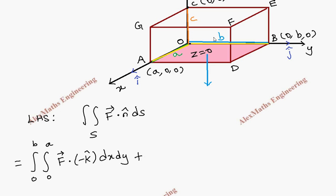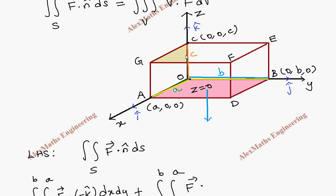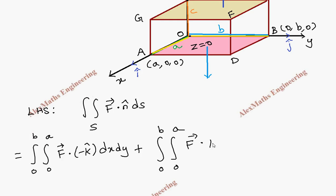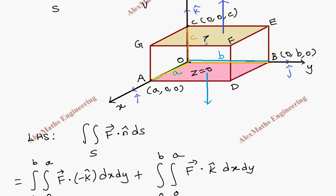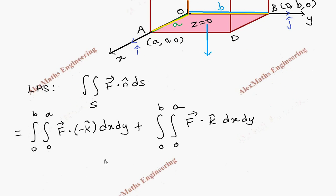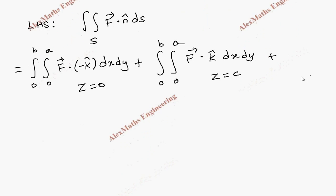For the top surface, x ranges from 0 to a and y from 0 to b. The n-cap points upward along the k direction, so it is dot k-cap, with dS = dx dy. The equation of this plane is z=c. So for the bottom surface the equation is z=0 and for the top surface z=c. Now coming to the left surface: F dot n-cap, where the left surface region has n-cap pointing opposite to j-cap.